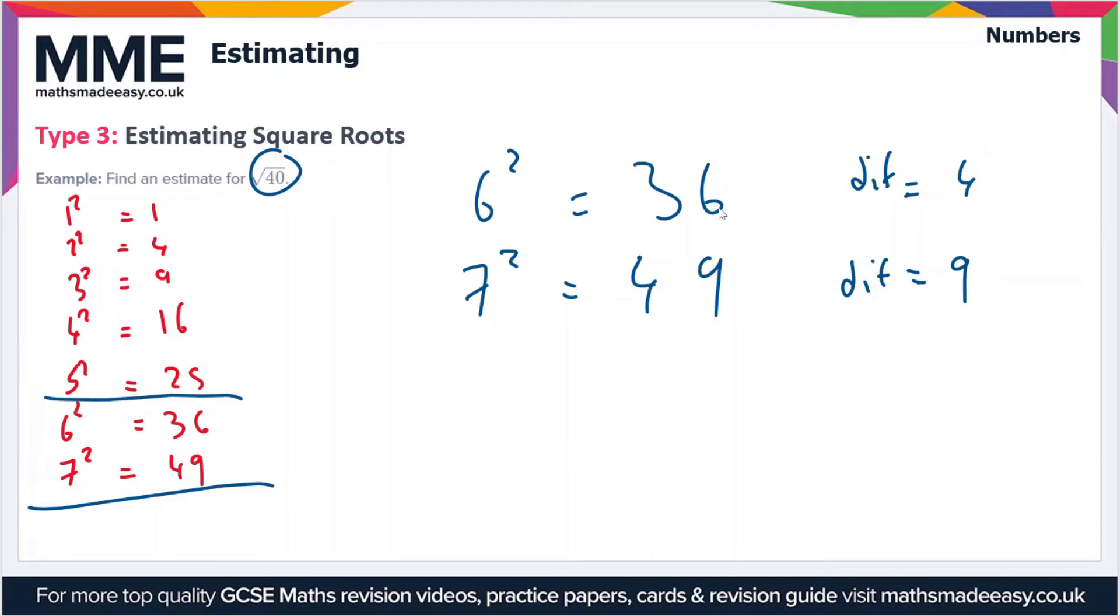So that means that the square root of 40 is going to be closer to the square root of 36 than it is to the square root of 49. Let's come up with an estimate then. The square root of 40, it's going to be a bit closer to 6 than it is to 7, so we'll say that is approximately equal to 6.3.